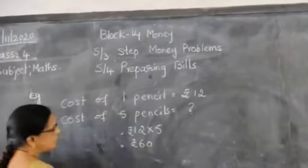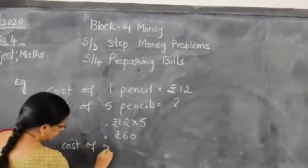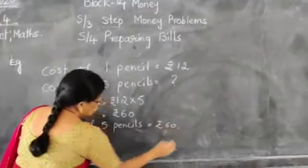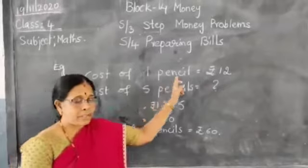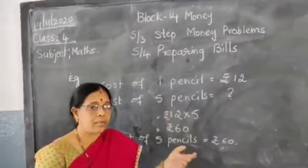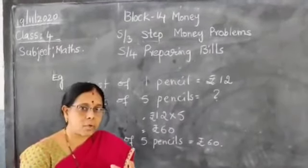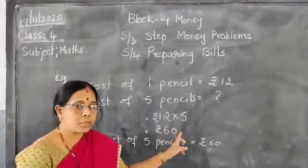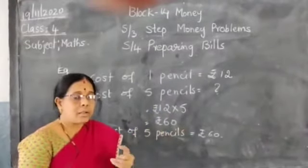So cost of 5 pencils is equal to rupees 60. Children, cost of 1 pencil is equal to 12 rupees. In the question they are asking cost of 5 pencils. When you are given the cost of 1 item and asked for more items, you have to multiply. Understood children?